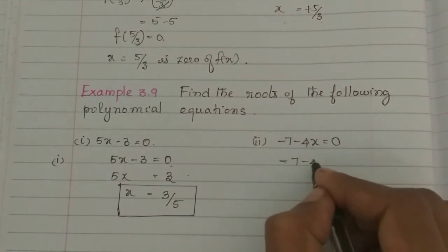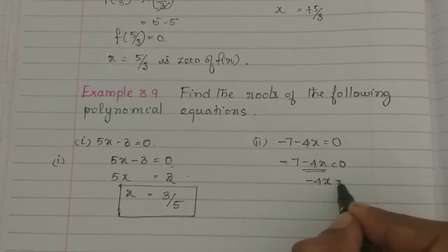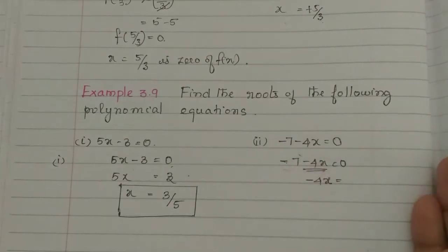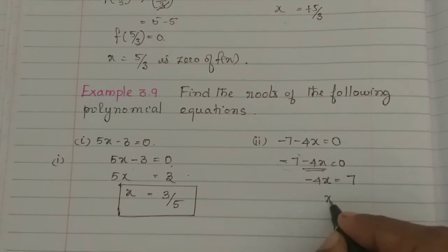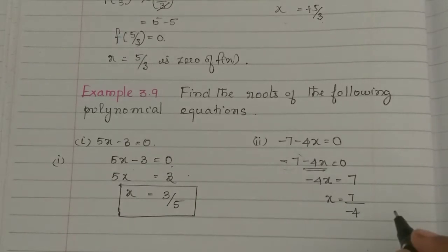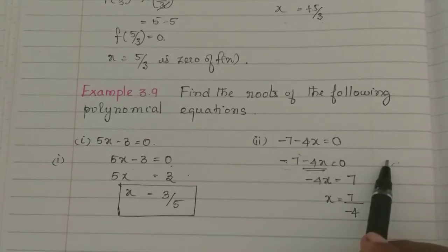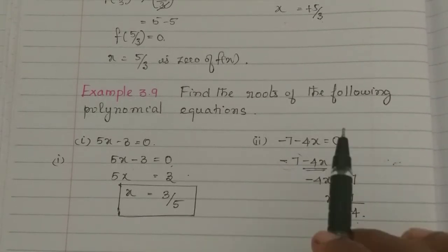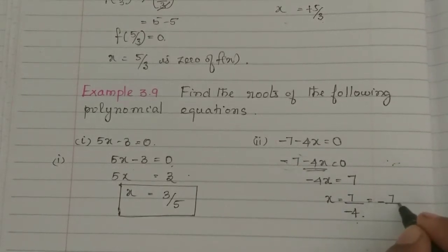The second equation: minus 7 minus 4x equals 0. The x term is minus 4x, and minus 7 is the constant. So minus 4x equals 7, and x equals 7 divided by minus 4. When you have a minus in the denominator and a positive in the numerator, the result is negative.